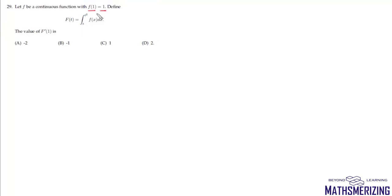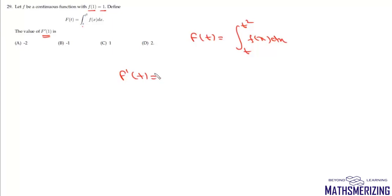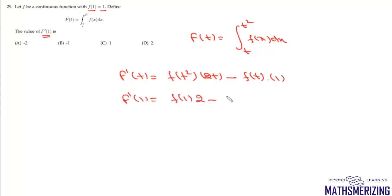Question 29: given F(t) = ∫ₜᵗ² f(x) dx with f(1) = 1, find F'(1). Using the Newton–Leibniz formula: F'(t) = f(t²)·2t − f(t)·1. At t = 1: F'(1) = f(1)·2 − f(1) = 2 − 1 = 1. That's option C.